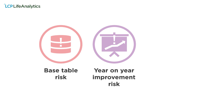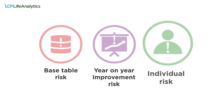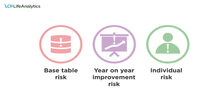Secondly, improvement risk: the risk that year-on-year improvements in mortality rates are misestimated. And finally, individual risk: the risk arising due to the timing of individual member deaths — for example, a high-liability member living longer than expected.